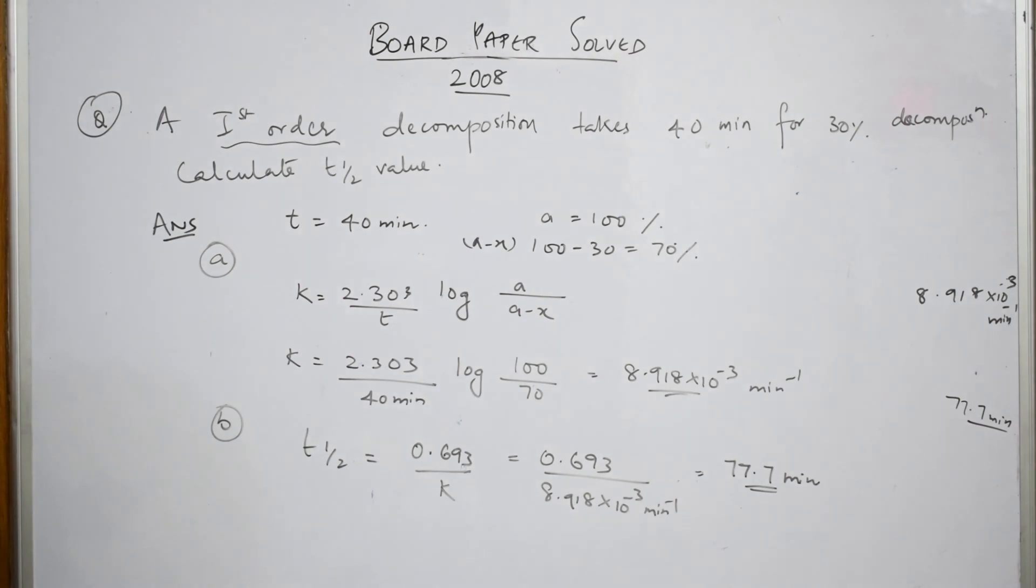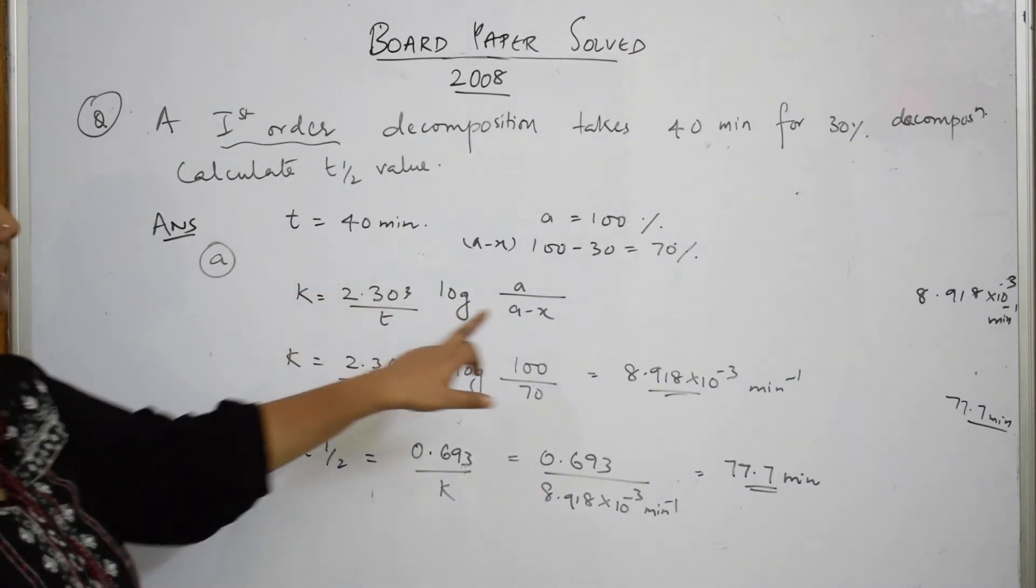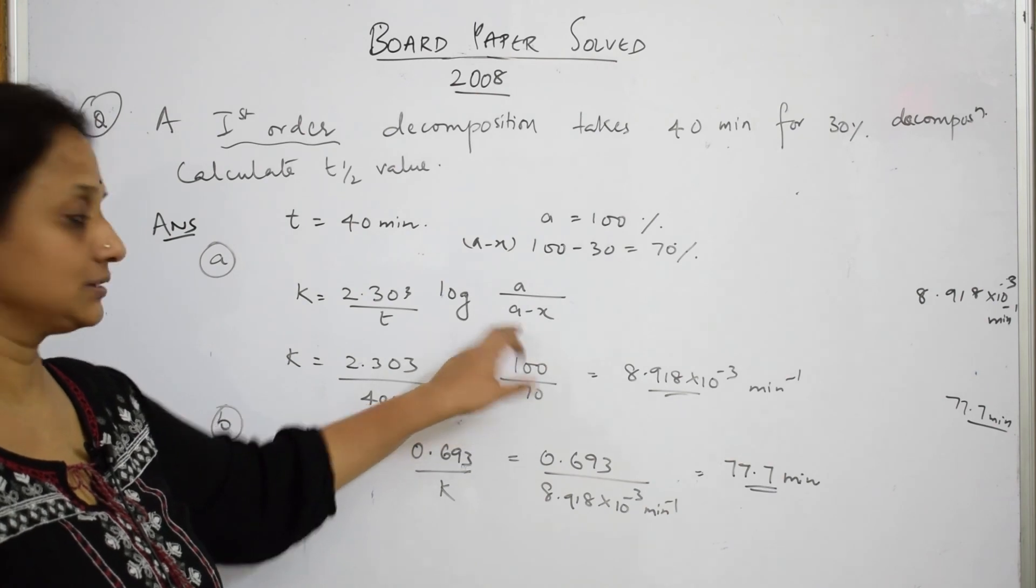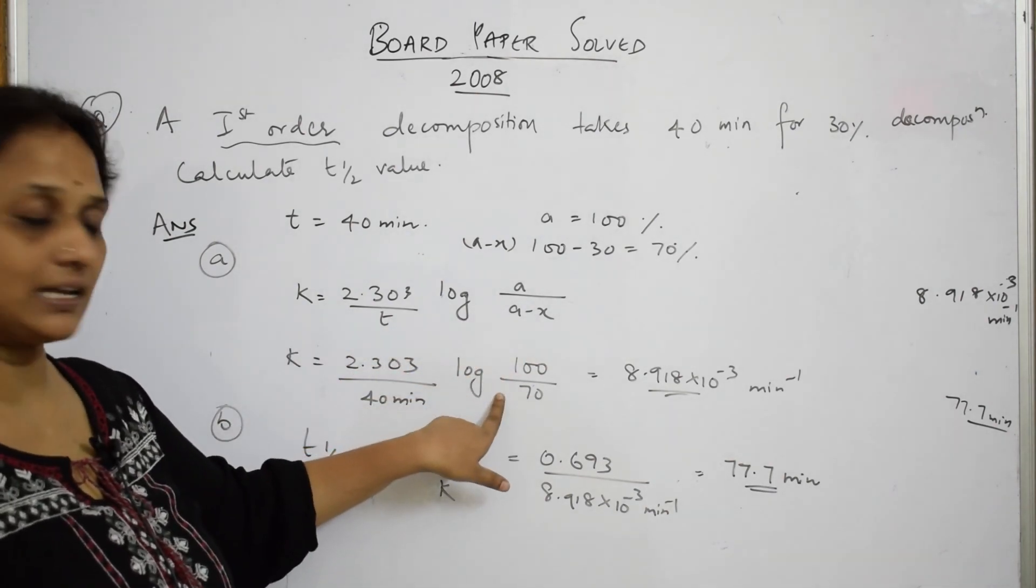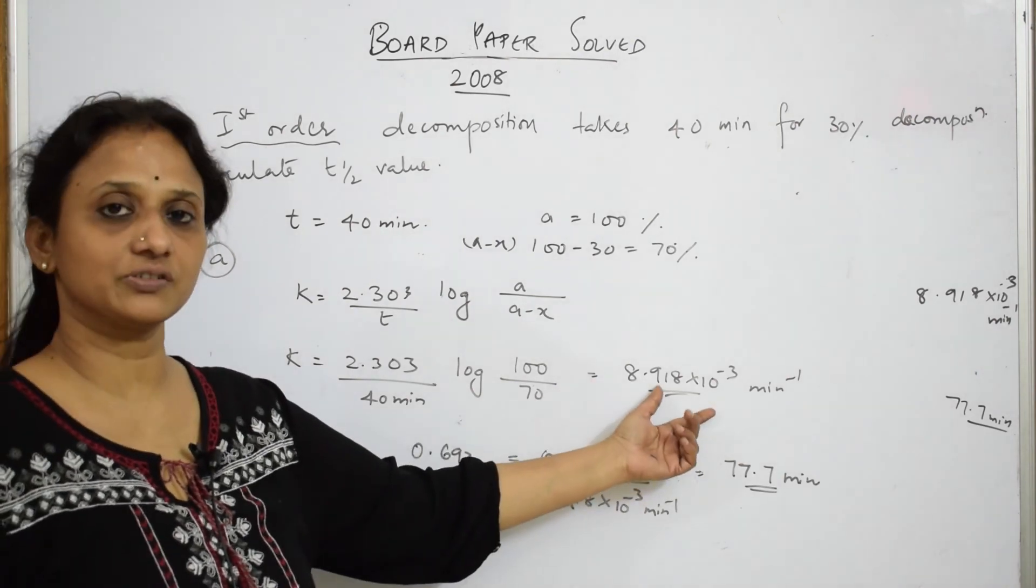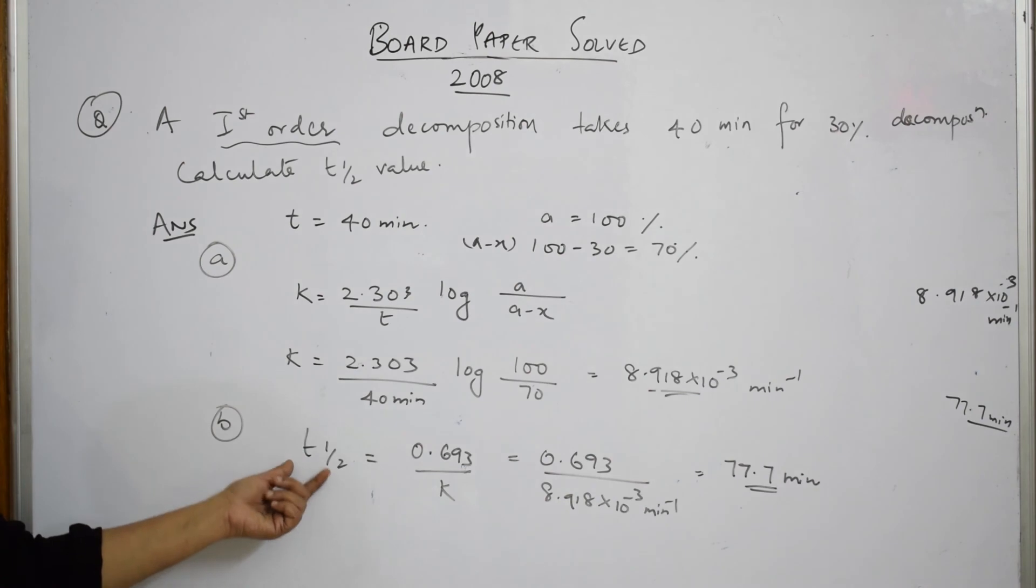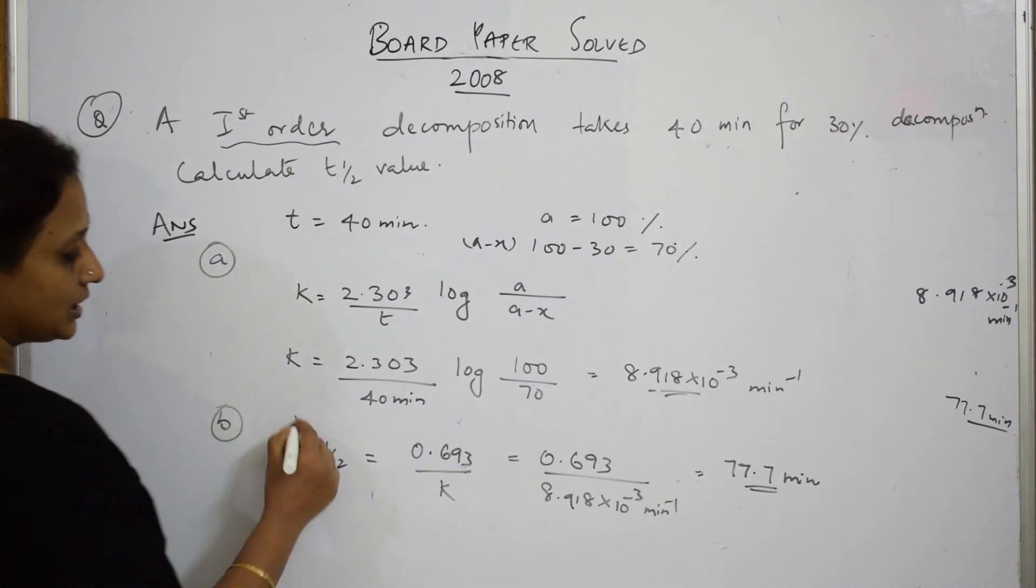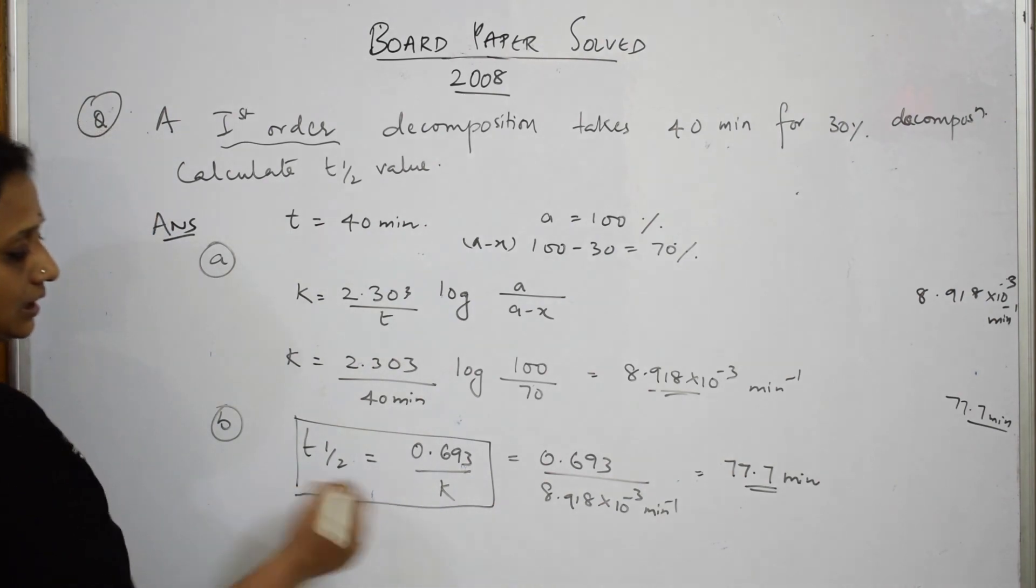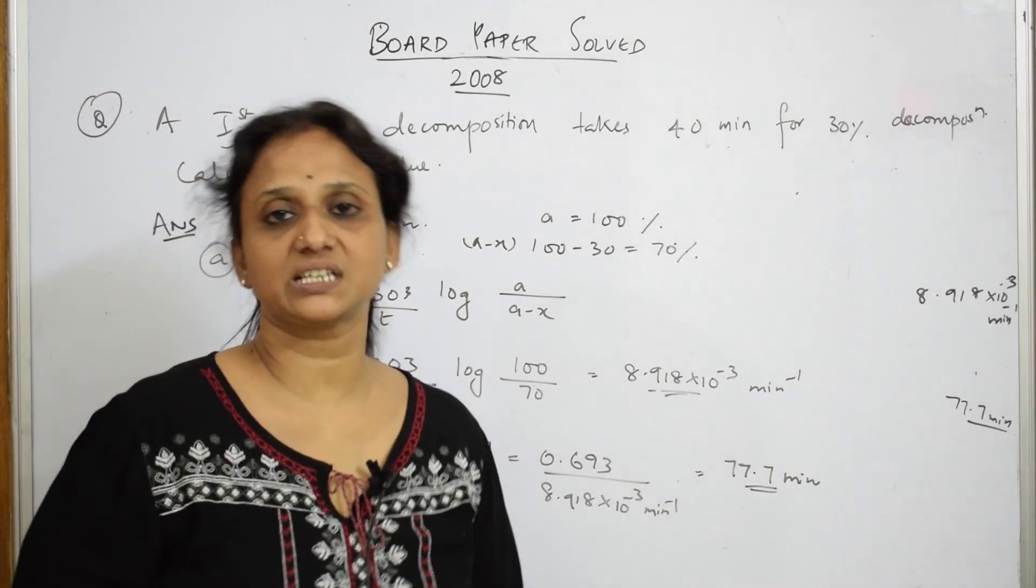What did I do? I noted the given data, written the formula, substituted the values, and got an answer of rate constant in minute inverse. With that, I've gone back to calculate the t half because this is the relation for t half. Substitute the value, and finally you've got an answer of 77.7 minutes.